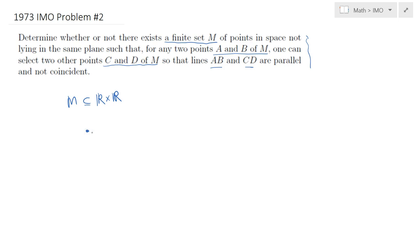There are various constructions. One way is the following: if you start with a square, the square will not quite do it. Because if you pick points A and B, then line AB is parallel to CD. However, if you pick points A and C, you realize there doesn't exist two other points which will give you the desired result.